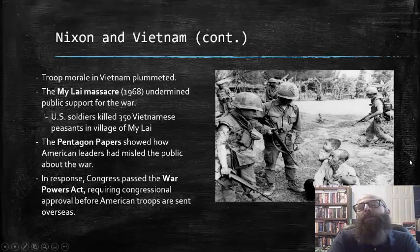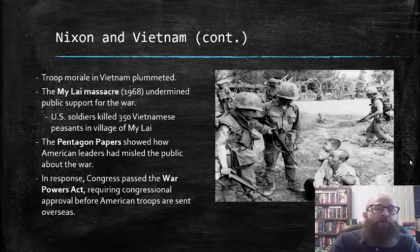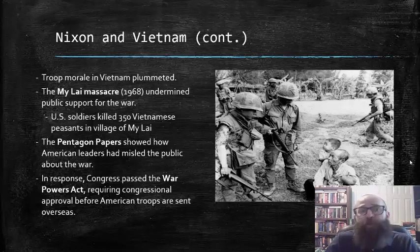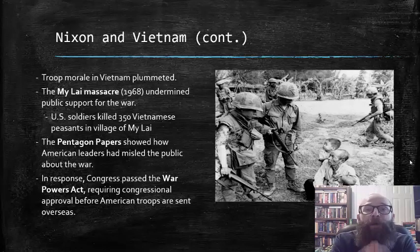As the Vietnam War dragged on into the late 1960s and early 1970s, it became more and more apparent to many American soldiers involved in the war that the war was essentially unwinnable. As a result, troop morale in Vietnam plummeted. In 1968, the My Lai Massacre occurred, where U.S. soldiers killed about 350 Vietnamese peasants in the village of My Lai, accused of being North Vietnamese sympathizers.